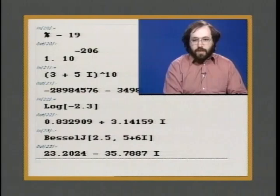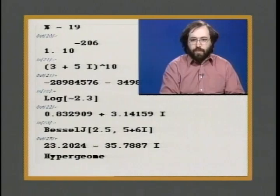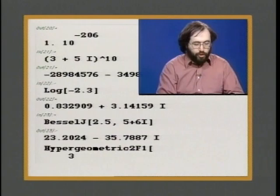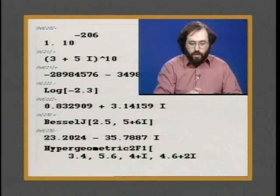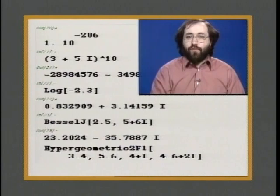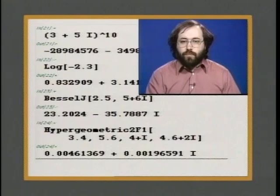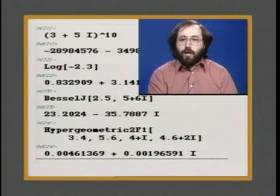There's a really quite large collection of mathematical functions in Mathematica. For example, you could take a quite general function like a hypergeometric function and ask Mathematica to give you the numerical value for it. Hypergeometric functions have quite a few arguments — this is the 2F1 hypergeometric function, which has a total of four arguments. After a short delay, Mathematica will give us the result for the computation involving this hypergeometric function.